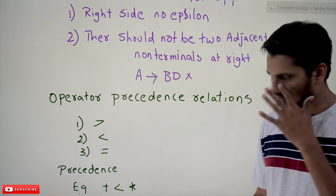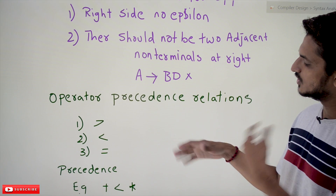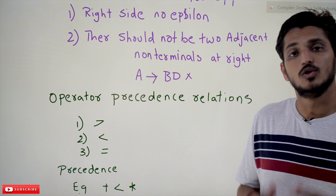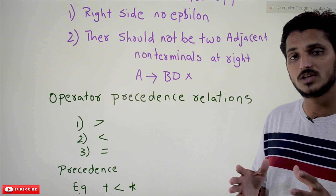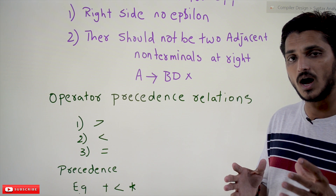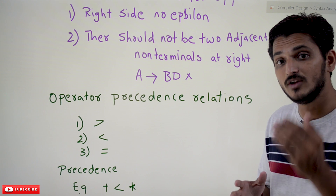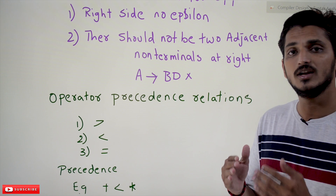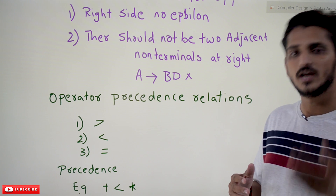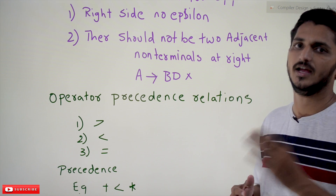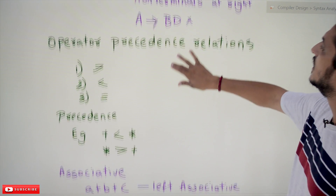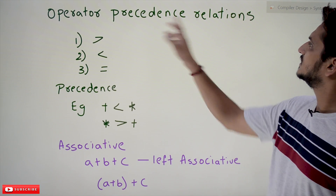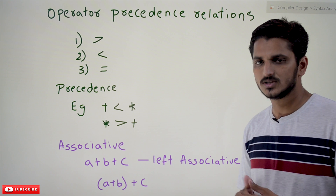One more important point: we will explain some concepts and you will get clarity about all these conditions at the end when we do the example. Until then just follow the conditions — you will get clarity at the end. So in operator precedence parsing there are a few relations which we use.